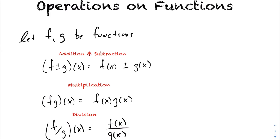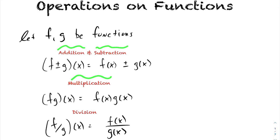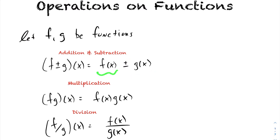In today's lesson we're going to be looking at operations on functions. Starting us off, we're going to have two functions, f and g. We want to take a look at the operations of addition, subtraction, multiplication, and division. When you're adding or subtracting functions together, notationally it's written as f plus g acting on x, or f minus g acting on x, and that becomes f(x) plus g(x), or f(x) minus g(x).